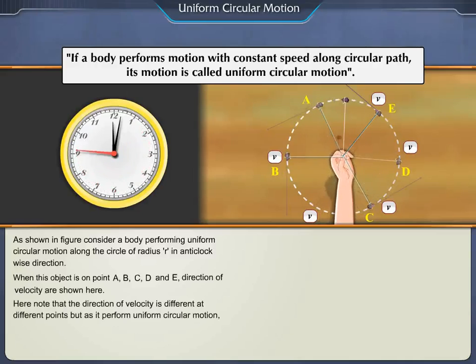Here, note that the direction of velocity is different at different points but as it performs uniform circular motion, speed is constant.